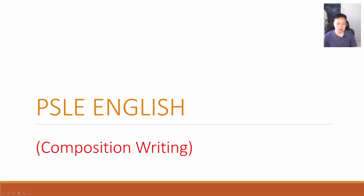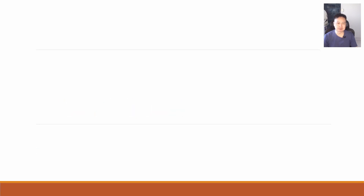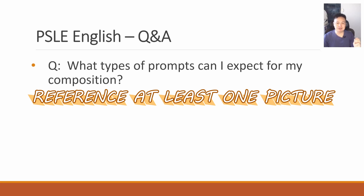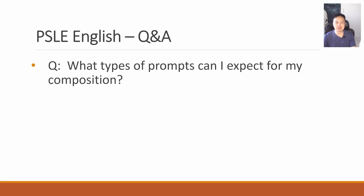Now let's move on to composition writing, which is worth 40 marks — that is more than double the weightage of situational writing. First question: what types of prompts can I expect for my composition? The prompts given in the question are very basic — they are just there to help weaker students brainstorm ideas. Don't rely too much on them. Try to rely more on the pictures. Be reminded you are supposed to emphasize at least one of the pictures. If you just ignore all the pictures, you might be slightly penalized.